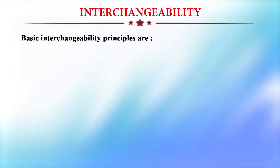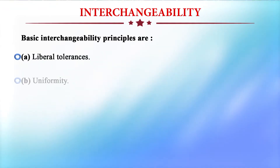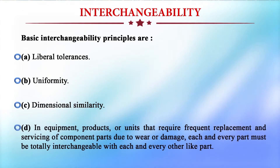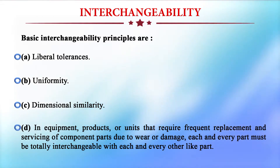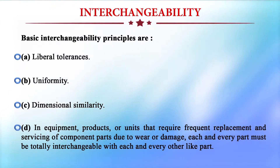The basic interchangeability principles are liberal tolerance, uniformity, and dimensional similarity. Equipment, products, or units that require frequent replacements and servicing of component parts due to wear or damage must have each part totally interchangeable with every other like part. For example, in medicines, if a particular medicine is not available, the same composition medicine may be available. Similarly, an interchangeable part having similar function can be used — that is why standardization helps in replacing and interchanging parts.